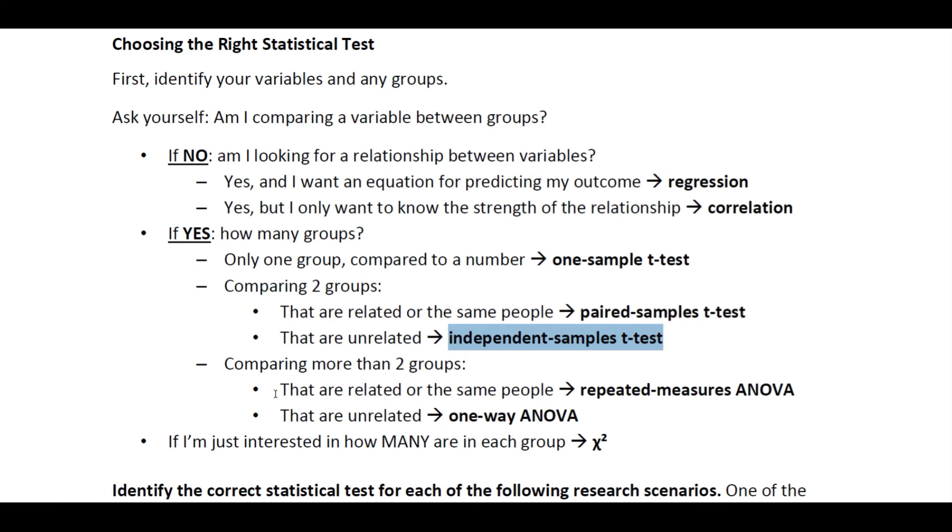If you're comparing more than two groups, if those groups are related or the same people, it's a repeated measures ANOVA. If they're unrelated, then it's a one-way ANOVA. And we touched a little bit on the fact in class that there are actually additional, more ANOVAs, versions of ANOVA, that we can use. But as this is an introductory statistics class, this is as far as we're going to go with ANOVA.